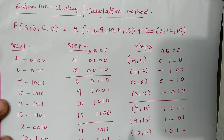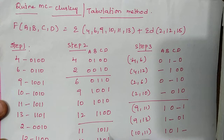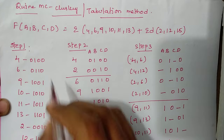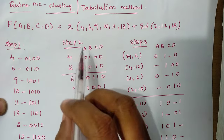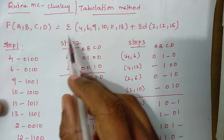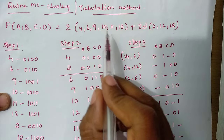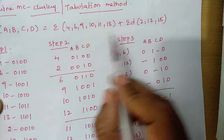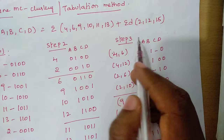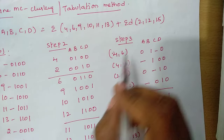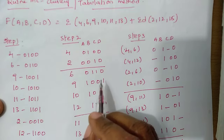Hi friends, today in this video I am going to discuss about the Quine-McCluskey method, the tabulation method. The given problem is: sum of minterms 4, 6, 9, 10, 11, 13 with don't care conditions 2, 12, and 15.